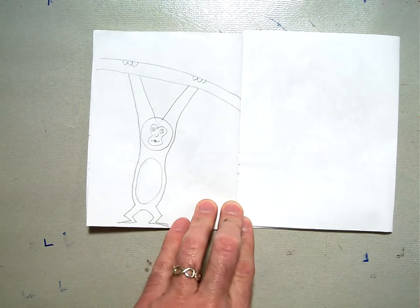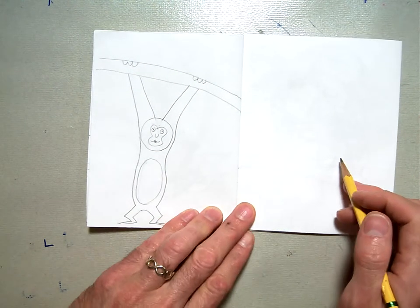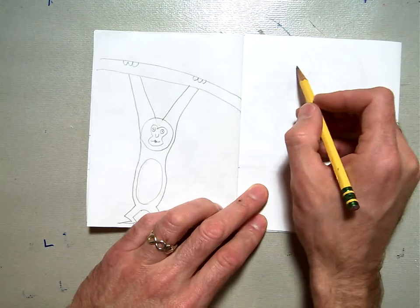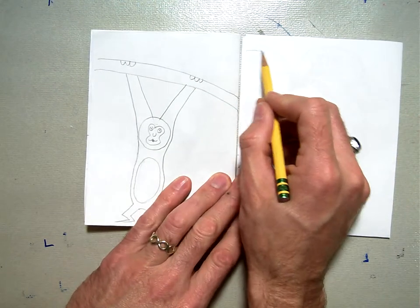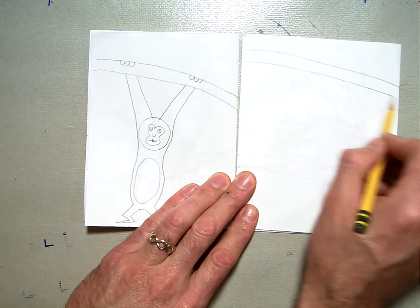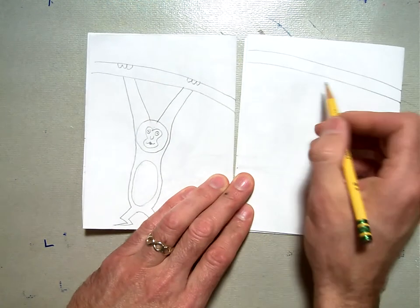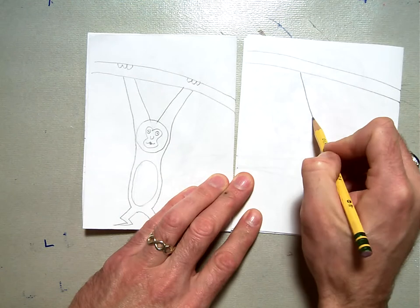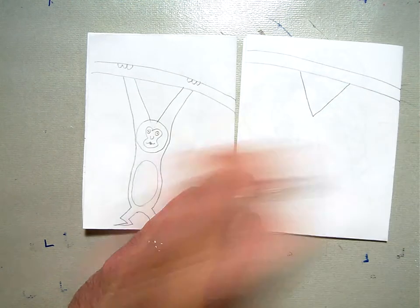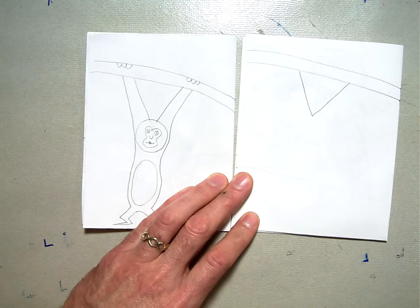Now we're going to start with our monkey. I'm going to start the monkey with two parallel lines for the branch. We're going to hang him off of a branch. So start two parallel lines like that. And then we're going to draw the letter V just like that so that it's touching the branch for his arms.